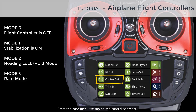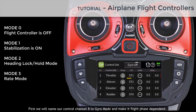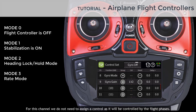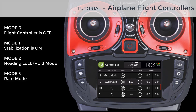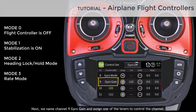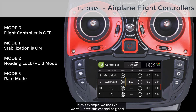From the base menu we tap on the control set menu. First we will name our control channel 8 to gyro mode and make it flight phase dependent. For this channel we do not need to assign a control as it will be controlled by the flight phases. Next we name channel 9 gyro gain and assign one of the levers to control the channel — in this example we use LV2. We will leave this channel as global.